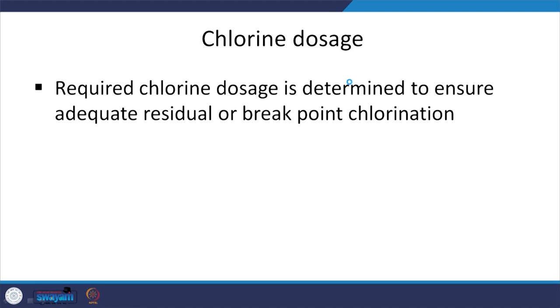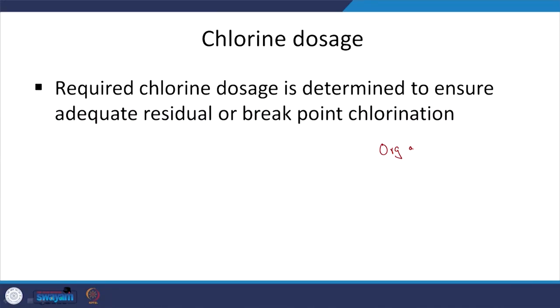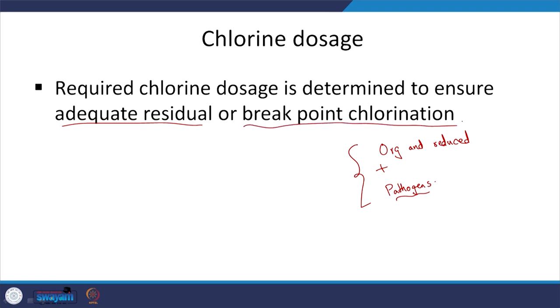Now, chlorine dosage — how much chlorine to add. I am adding chlorine as an oxidizing agent and need to take care of both the oxidation of organics and other reduced forms like manganese and iron, and also have enough chlorine left to kill pathogens. I need to ensure adequate residual chlorine, and for that we have something called breakpoint chlorination. One aspect to note: we know wastewater can contain ammonia (NH3), and if we add an oxidizing agent it can go to monochloramine NH2Cl or, at higher concentration, to dichloramine NHCl2.